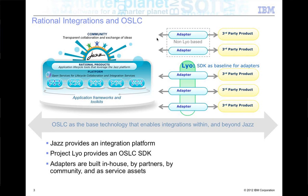On top of that platform are the Rational products themselves. The Rational Solution for Collaborative Lifecycle Management included Rational Team Concert — change and configuration management, source code management, planning, and build — as well as Rational Quality Manager, a quality tool, and Rational Requirements Composer, a requirements tool, plus reporting and dashboarding. Also within the platform are application frameworks and toolkits. Surrounding all of this is the community itself — Jazz.net — where we develop these tools and platforms, share our strategies and plans in an open and transparent environment. You can review development plans, participate in forums, and submit defects.